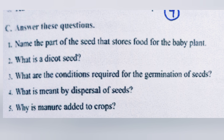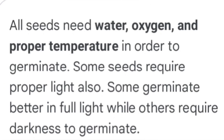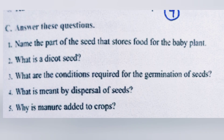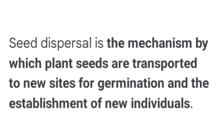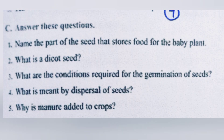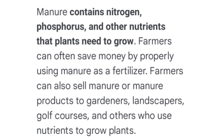Question number three: what are the conditions required for the germination of seeds? Answer: all seeds need water, oxygen, and proper temperature in order to germinate. Question number four: what is meant by dispersal of seeds? Answer: seed dispersal is the mechanism by which plant seeds are transported to new sites for germination and the establishment of new individuals.